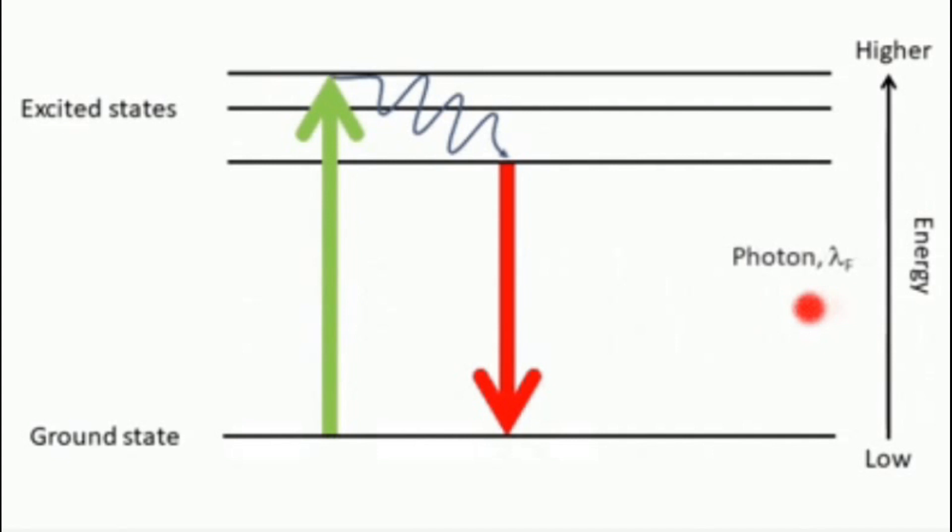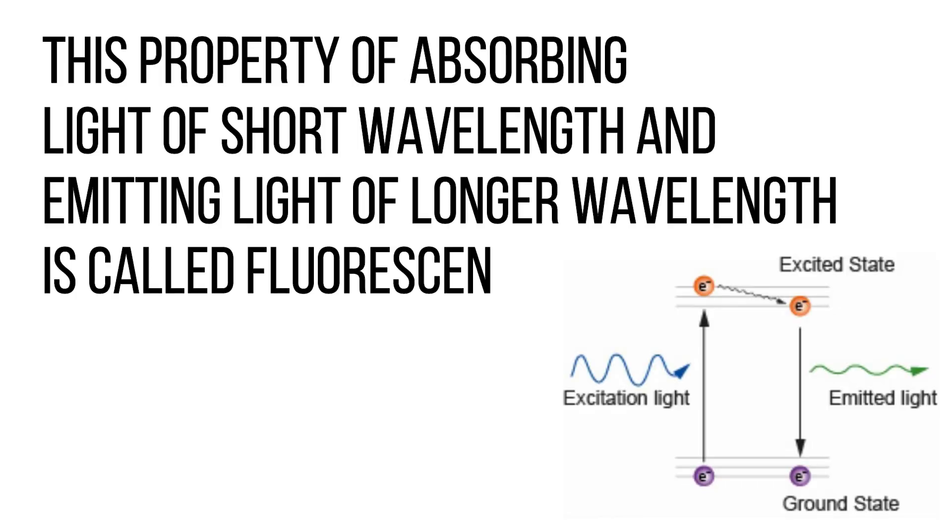And because of which it appears to be orange. And this property of absorbing light of short wavelength and emitting light of longer wavelength is called fluorescence.